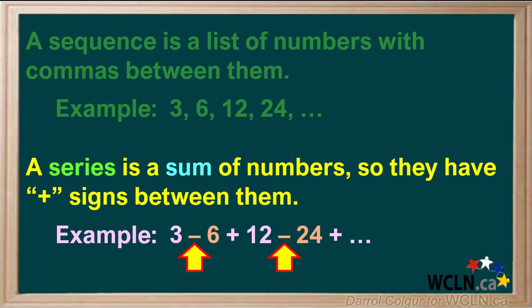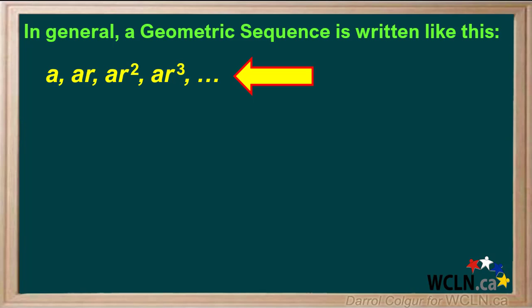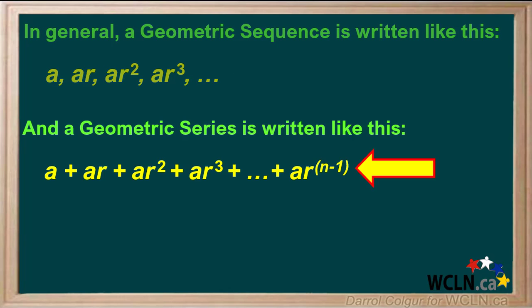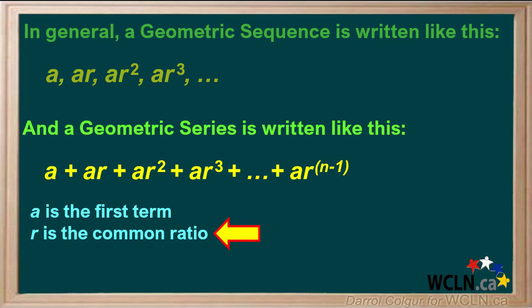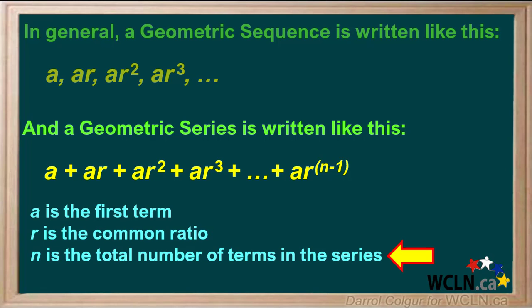If some of the numbers in a series are negative, they will have a minus sign in front of them. For example, adding negative 6 is the same as subtracting 6. In general, a geometric sequence is written like this: A, AR, AR squared, AR cubed, etc. And a geometric series is written like this, because it's a sum. Where A is the first term, R is the common ratio, and N is the total number of terms in the series.